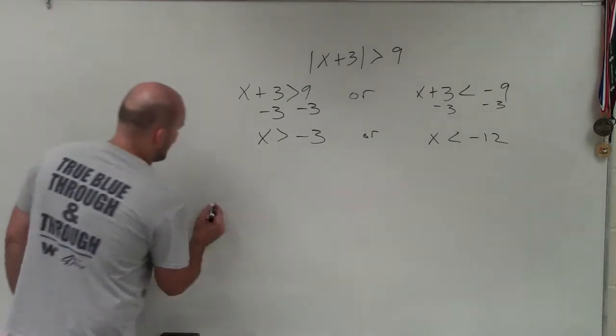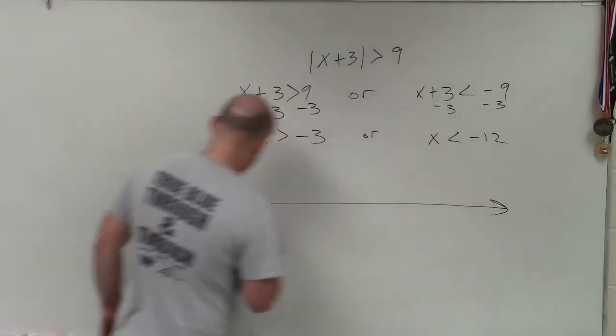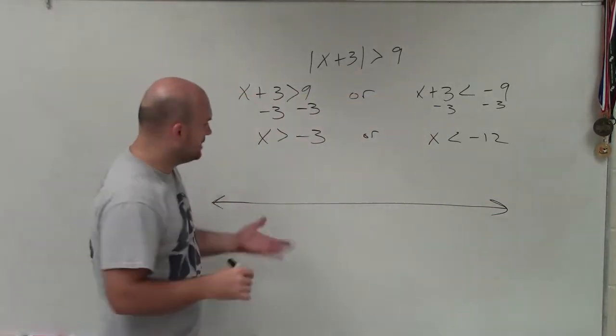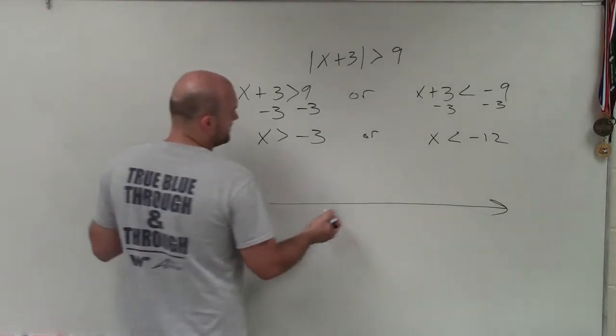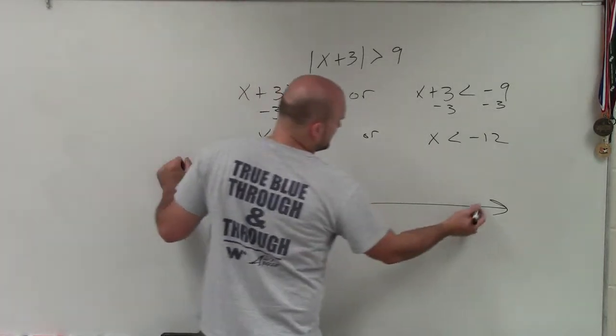Now let's go ahead and graph this. If we're going to graph this on a line graph, I need to make sure that I go from negative 12 and negative 3. Let's start at 0.